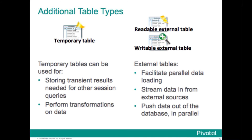Greenplum database provides support for a variety of table types to facilitate data processing and data loading or unloading. In addition to regular tables, the following types are supported: temporary tables, often used to store query results needed for a short period during a single connection session or for transforming data during an ELT process; and external tables, used to facilitate data loading and unloading, including retrieving a data stream from external sources such as Hadoop HDFS, a REST service, or an operating system command, and to move data between databases.